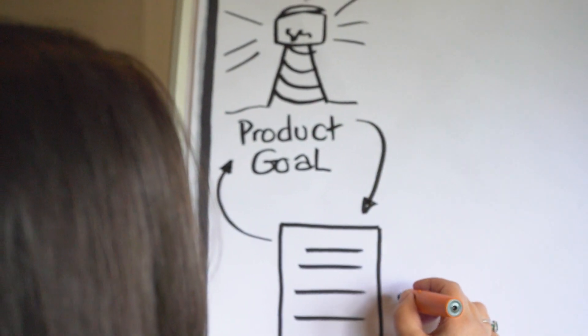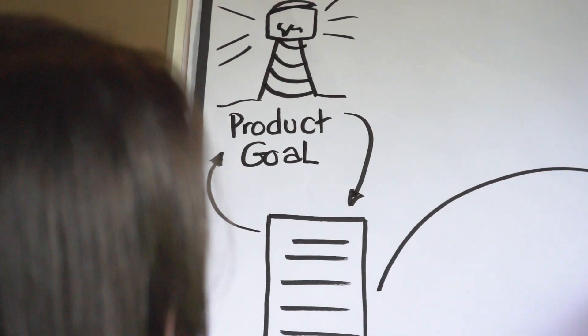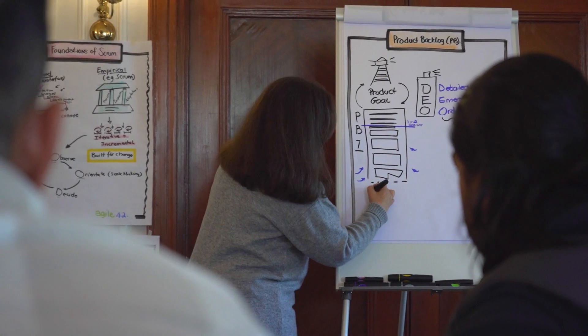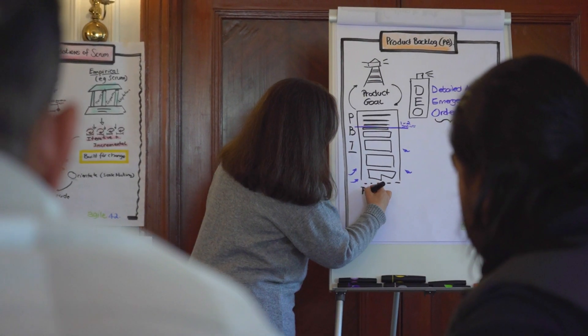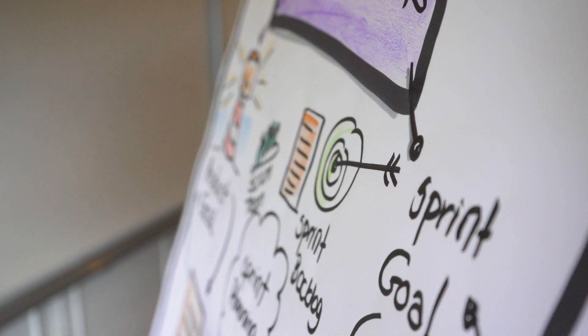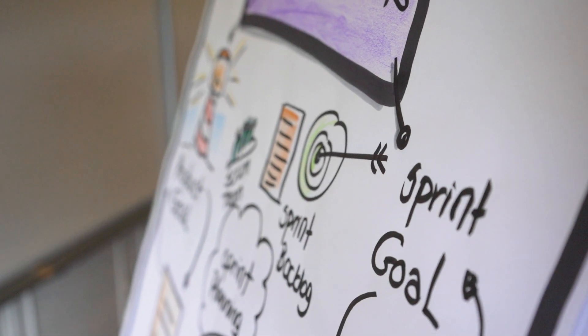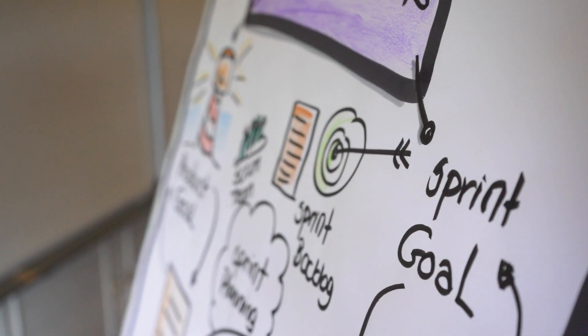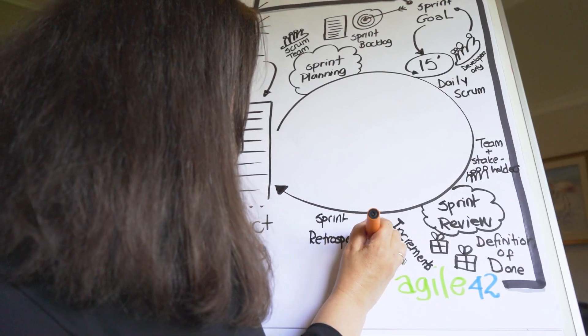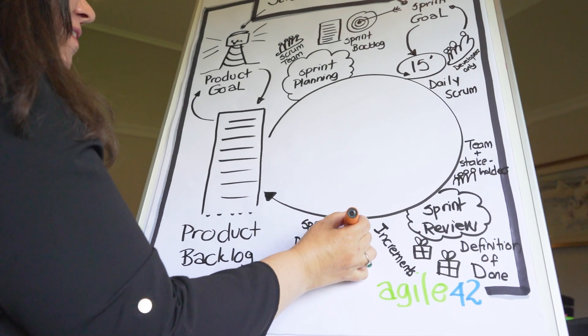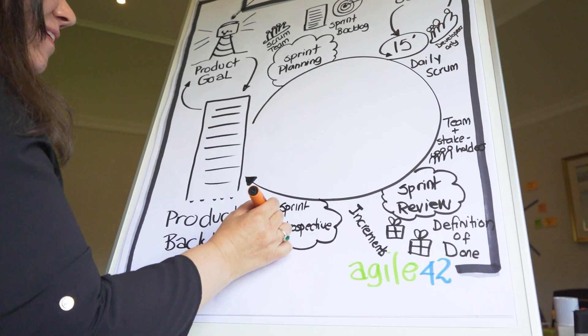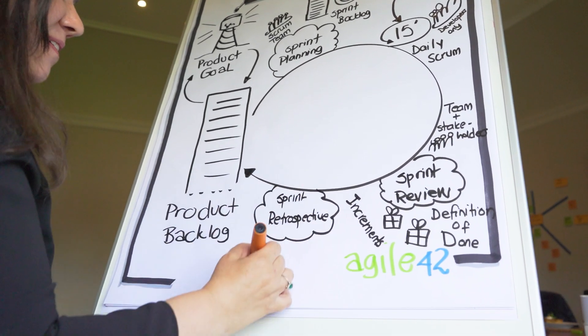There are two goals in Scrum. There's a Product Goal upon which your Product Backlog is created, and there's the Sprint Goal. The Sprint Goal is what the team works on every Sprint to complete items that are going to help reach that Product Goal. So it's very important that you know what those goals are and how to create them.